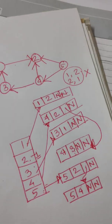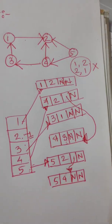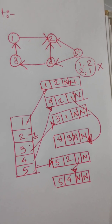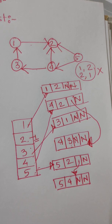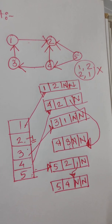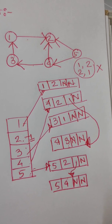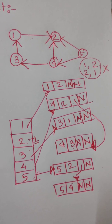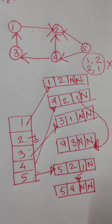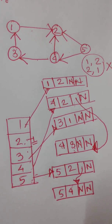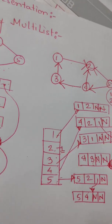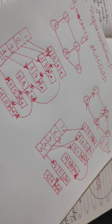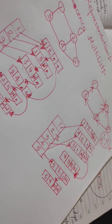This is the adjacency multi-list representation of a directed graph. As I have already mentioned, you might find other conventions in other books. So when you are answering any question on adjacency multi-list, it is better that you mention the convention you are using for your answer.